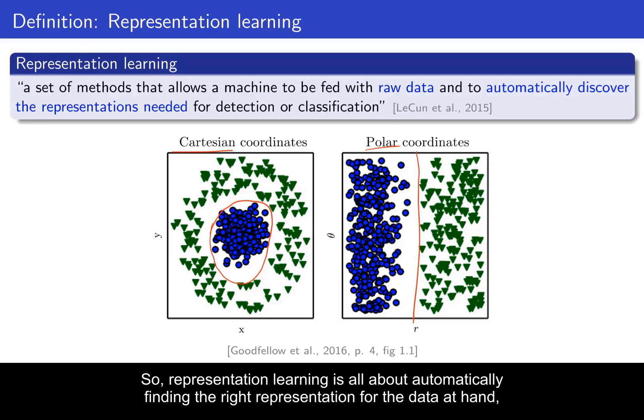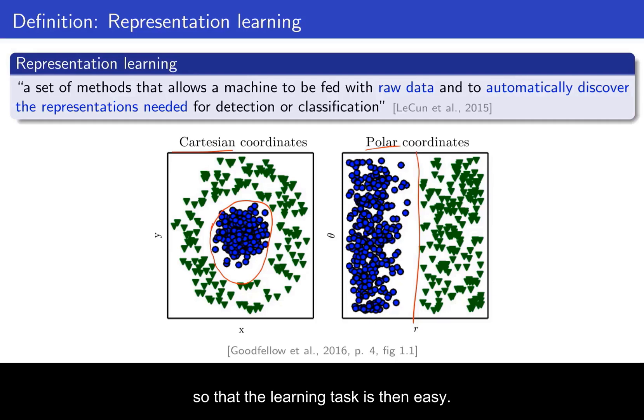Representation learning is all about automatically finding the right representation for the data at hand, so that the learning task is then easy.